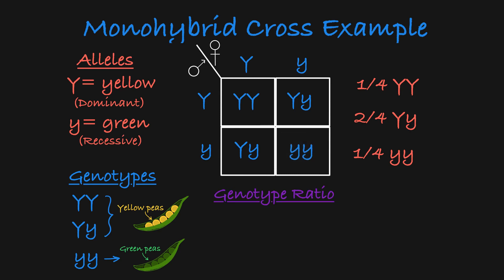This genotype ratio is a one to two to one ratio, which will be what you expect for every typical monohybrid cross.